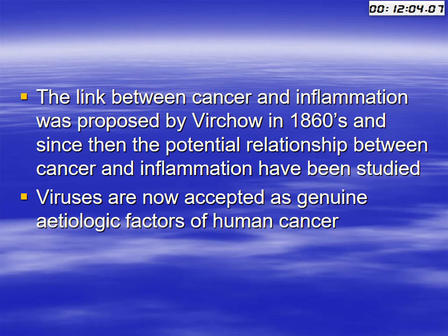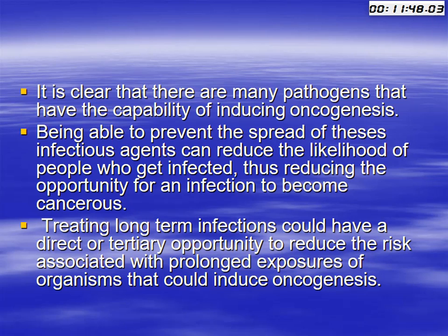The link between cancer and inflammation was proposed by Virchow in 1860, and since then the potential relationship between cancer and inflammation has been studied. Viruses are now accepted as a genuine etiologic factor for human cancer. It is clear that many pathogens have the capability of inducing oncogenesis. Preventing the spread of these infectious agents can reduce the likelihood of infection, thus reducing the opportunity for infection to become cancerous.